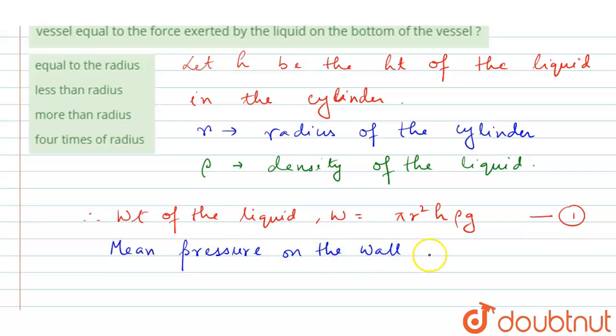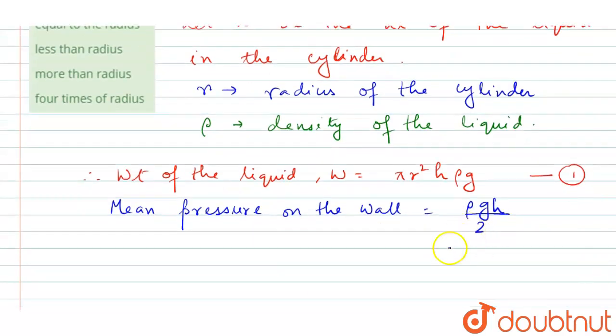So it has two walls, so it will be ρ g h by 2. The mean pressure will be this one. Now therefore...